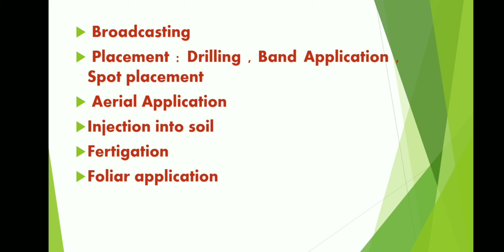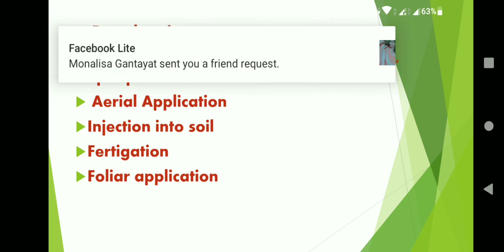Spot placement involves applying certain micronutrients or urea at a particular spot near the plant, at the base where the plant is connected with the soil. This is very important for crop growth. Urea super granules (USG) are also deep-placed in lowland rice using this method.